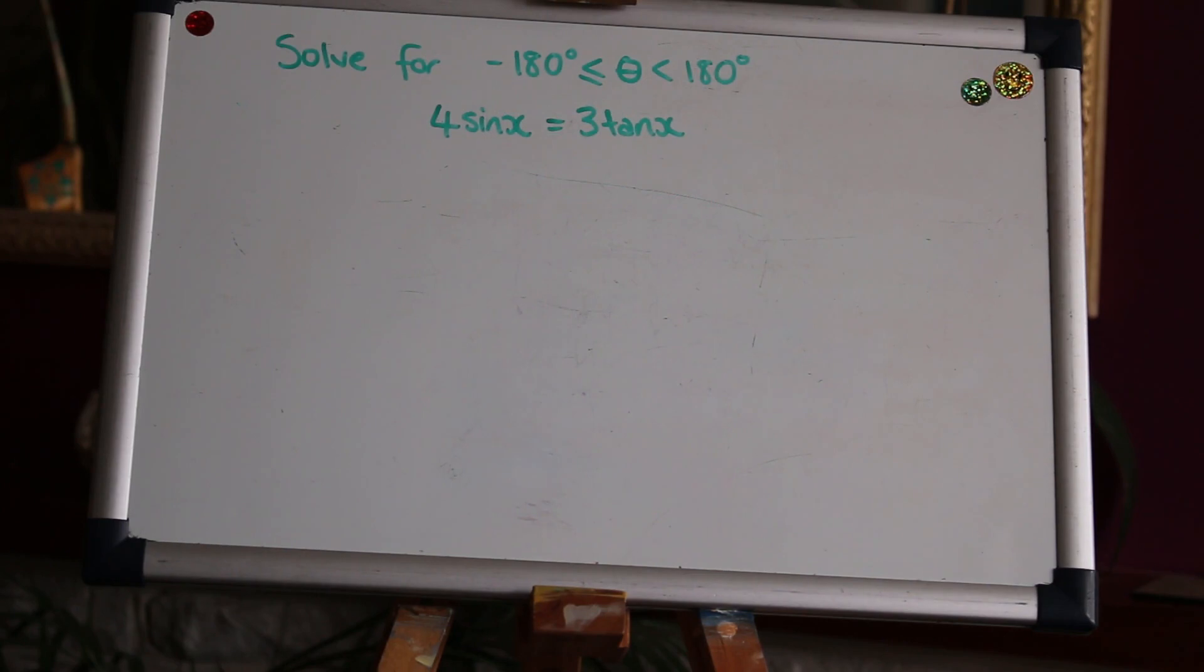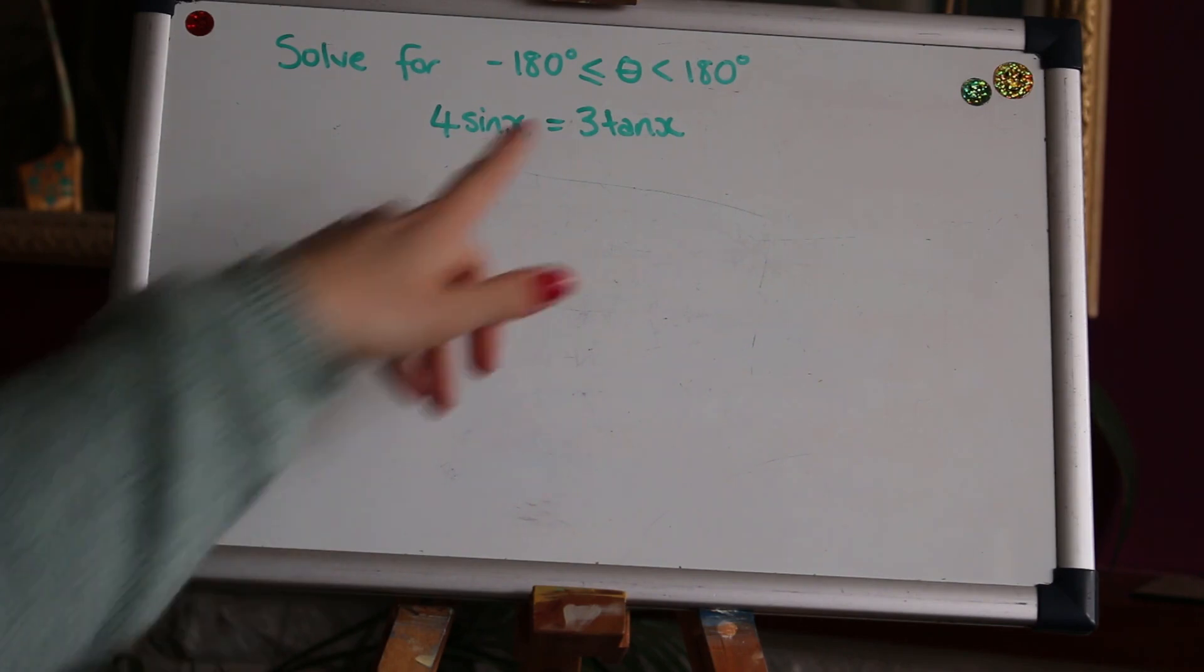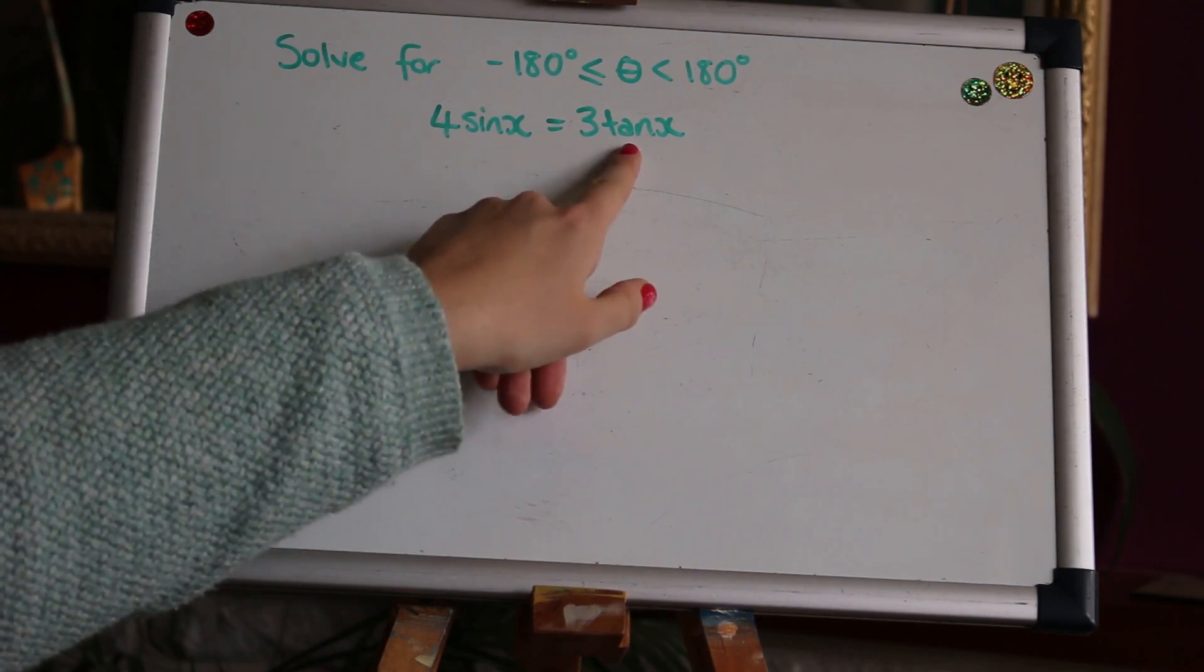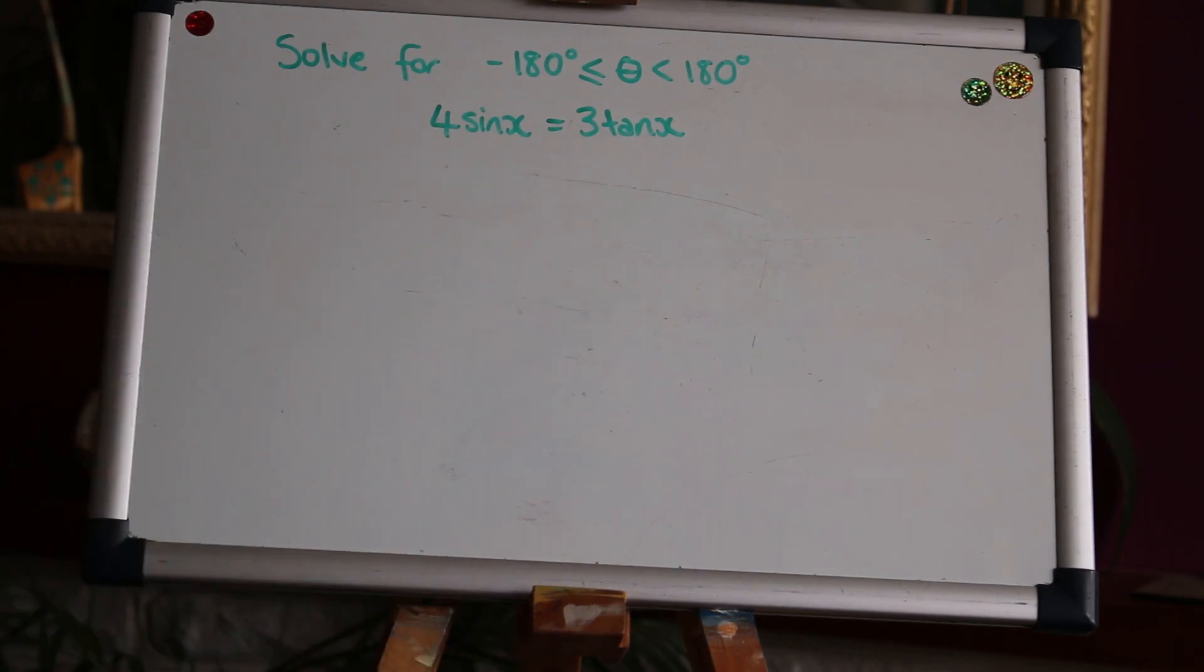Second problem now, again we're going to use the second identity of tan being sine over cos. This one might, I don't know if it might be more straightforward or obvious, but because we've got tan already over here so we can rewrite that as sine divided by cos.